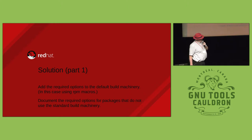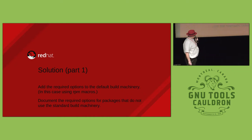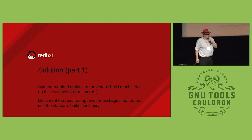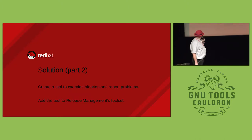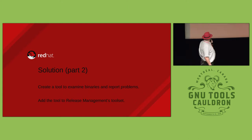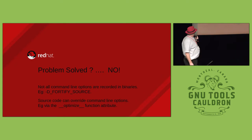The solution was fairly simple, at least for the first part. You add the necessary security command line options to your default build machinery - which for Red Hat was RPM. Then you create a document describing these options so that package maintainers know what they need to use, even if they're not using RPM. And then you create a tool that examines everything built and checks whether the options were used - that's the tool you can then use to prove you've done the right thing. You add it to release management and it says yes, this package is safe, or no, this package has missed options.